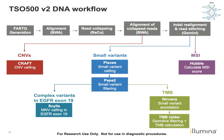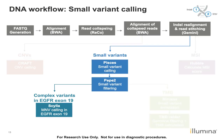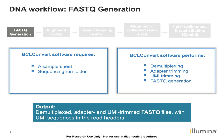Here's a broad overview of the DNA workflow. Starting with FASTQ generation: this uses the BCL Convert software, which takes a sample sheet and your sequencing run folder as input, performs demultiplexing, adapter trimming, UMI trimming, and FASTQ generation, and outputs demultiplexed adapter and UMI-trimmed FASTQ files with the UMI sequences in the read headers. Those UMI sequences in the read headers are what the UMI collapsing software looks for when we get to that step.